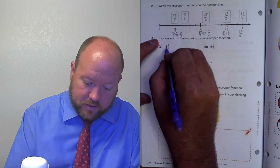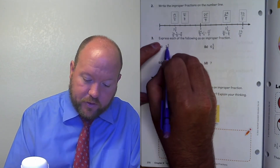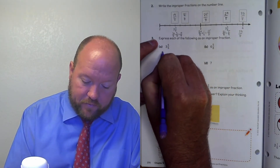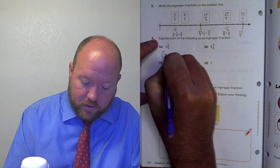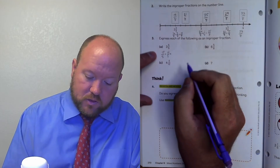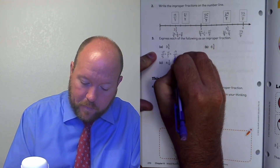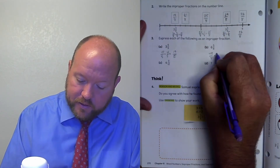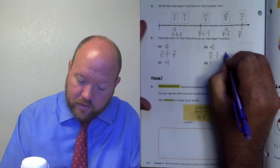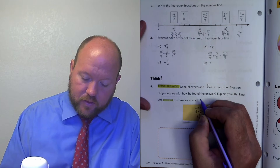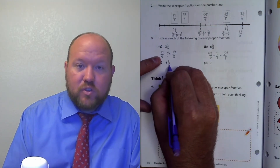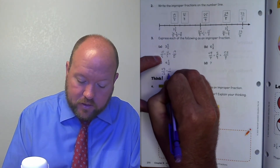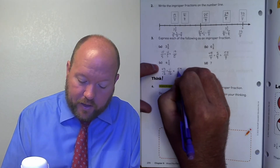Now turn the following into improper fractions. Three and four fifths: three times five is fifteen fifths, plus four fifths equals nineteen fifths. Six and five eighths: six times eight is forty-eight eighths, plus five eighths equals fifty-three eighths. Four and eleven twelfths: four times twelve is forty-eight twelfths, plus eleven twelfths equals fifty-nine twelfths.